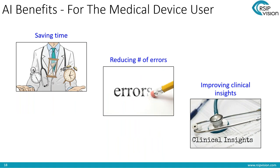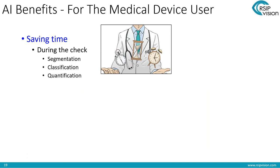When I speak about AI benefits, the main three that I can pretty much guarantee are saving time, reducing the number of errors, and improving clinical insights. The first thing is saving time. Once we have the medical device in use, there is a user who wants to save time — whether it's a clinical scenario treating a patient or a research scenario. In both cases, reviewing the scan takes time. Once we have segmentation, classification, and quantification in place, we can save a lot of time.